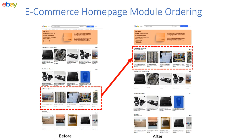Ideally, the homepage modules should be ordered in such a way that assigns higher spots to modules with more relevant items. With many such modules competing for the user's attention and a limited presentation space, prioritizing the module order is essential.